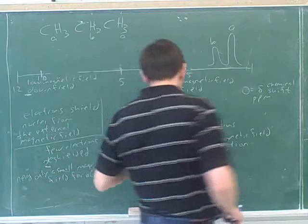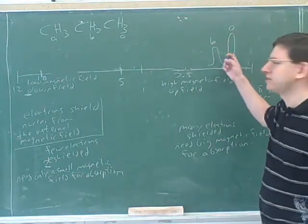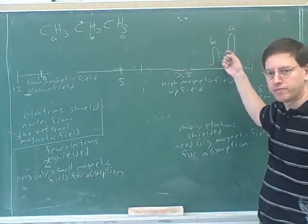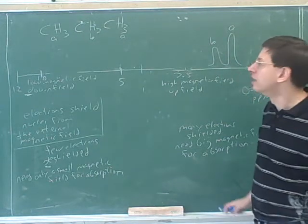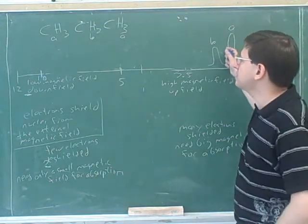And then hopefully they'll give you a printout where the calculator has calculated the ratio of the areas. The calculator hopefully will have given you the ratio of the areas here. For example, what's the ratio of these areas?